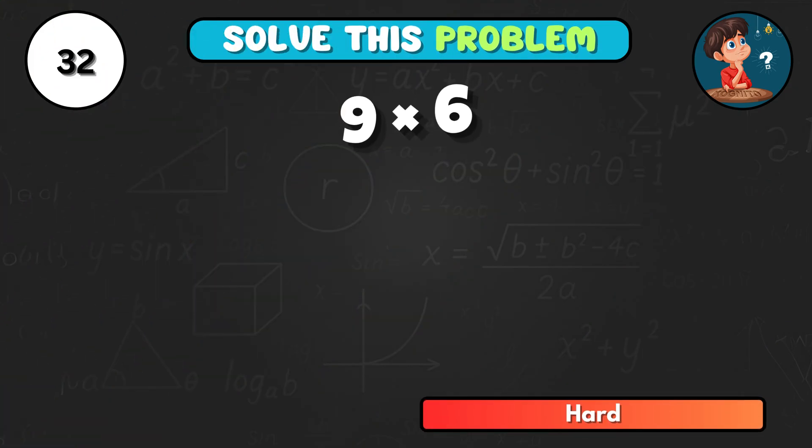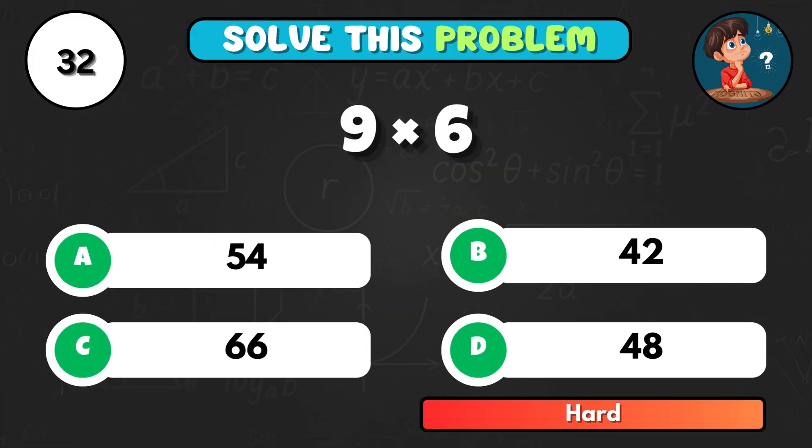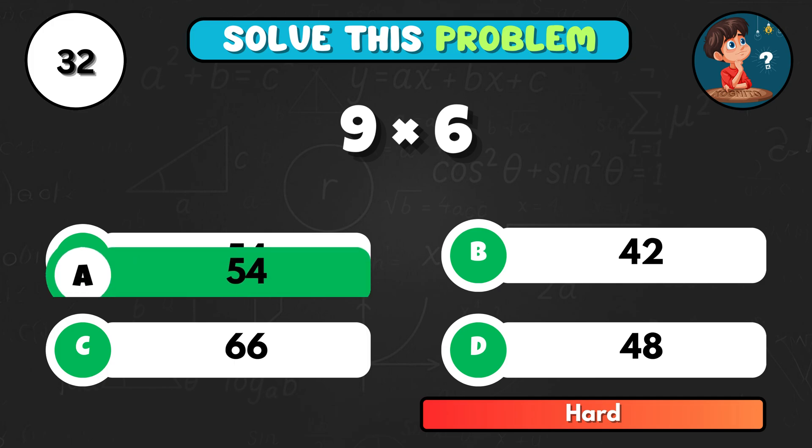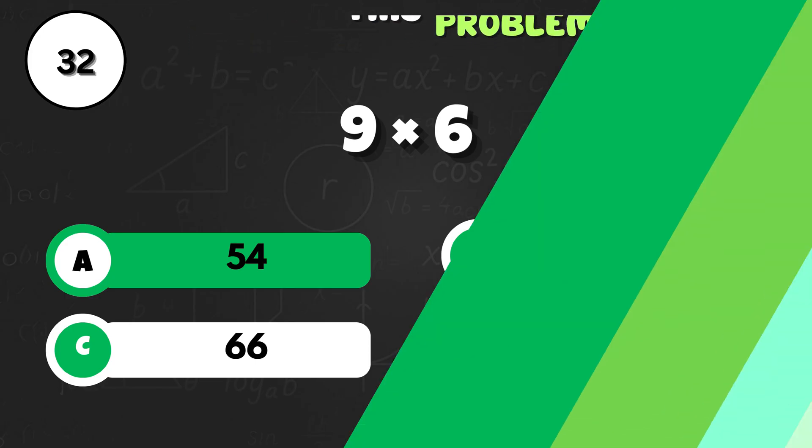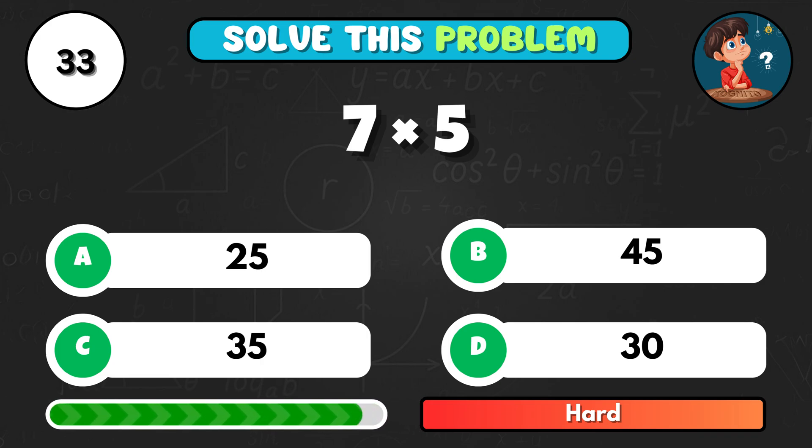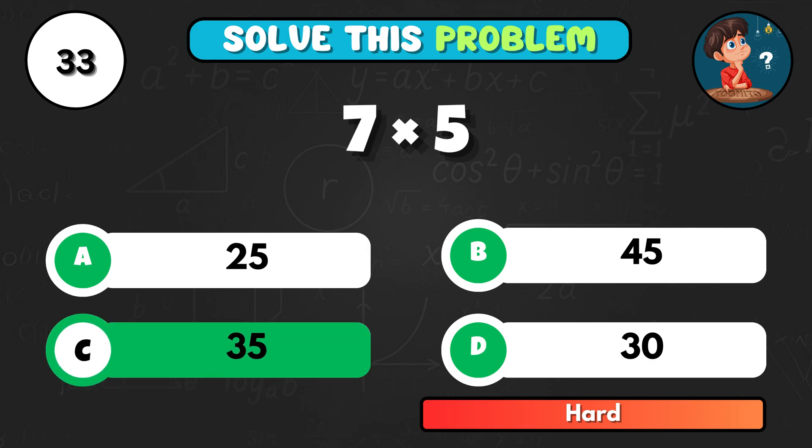Rapid fire. 9 times 6 equals... It's A, 54. Can you solve 7 times 5? Don't overthink. That's C, 35.